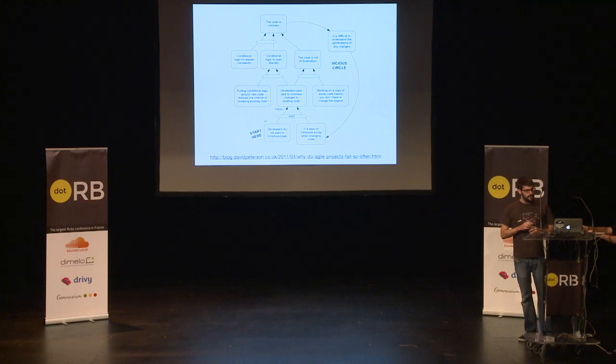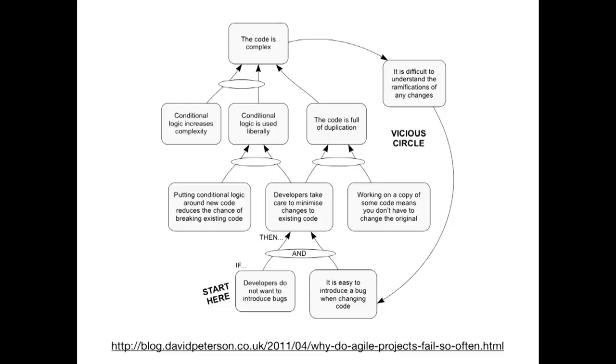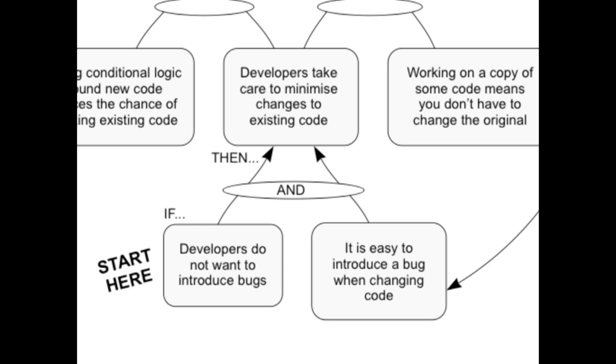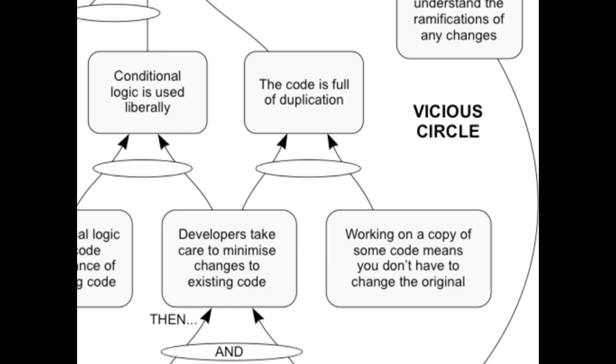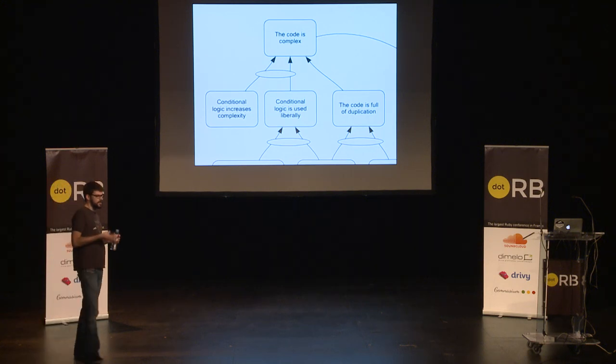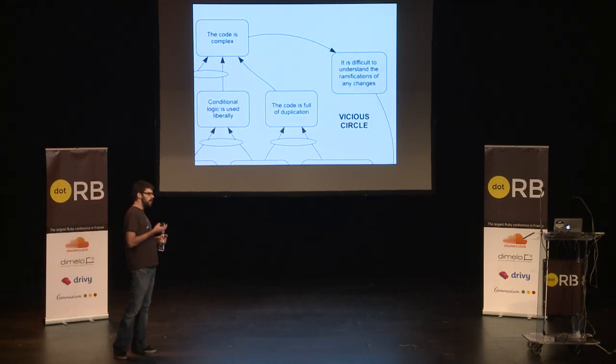David Peterson made this diagram that I really like. It explains at the code level why software quality issues start to appear. It starts with developers not wanting to introduce bugs, but realizing it's easy to introduce a bug when you change code. So you think: I can minimize the change to existing code if I copy and paste it, because then I'm not changing the existing code. This leads to duplication. Additionally, you can carve a code path around something with conditional logic, so you're not changing the existing code path — just adding a new one for this one thing. But over time, this creates complexity. Duplication and conditional logic creates complexity in object-oriented systems, making it hard to understand the ramifications of a change you're about to make.